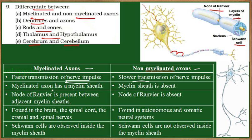The myelinated axon is covered by a sheet called the myelin sheet, which is absent in the non-myelinated axon. The node of Ranvier is present between the myelin sheets — it is the area of the axon not covered by the myelin sheet. Such nodes of Ranvier are absent on the non-myelinated axon.